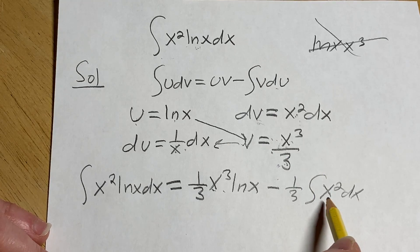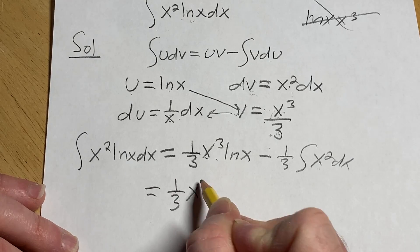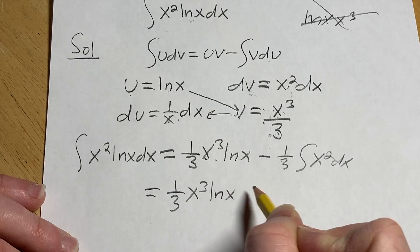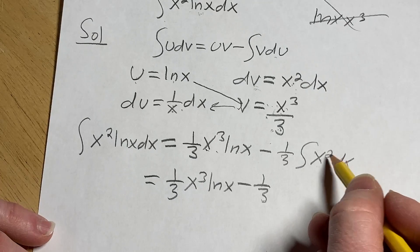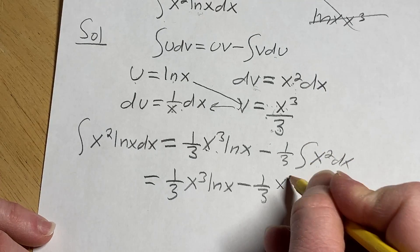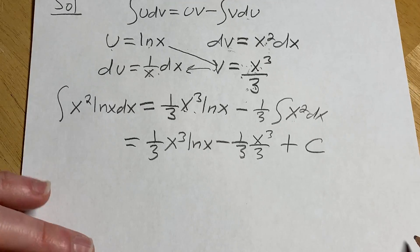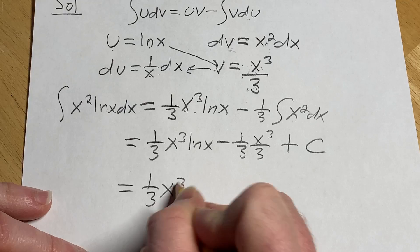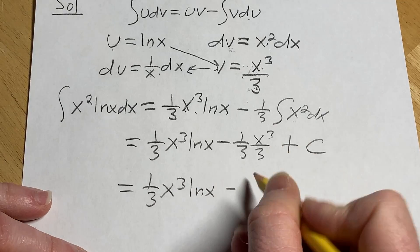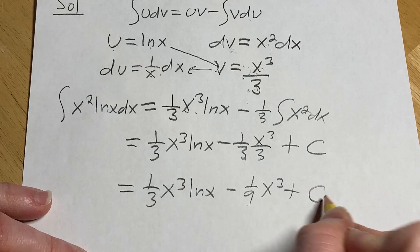This is easy to integrate, we can just use the power rule. This is equal to 1/3 x cubed ln x minus 1/3. Using the power rule here we'll add 1 to the exponent and divide by the result. So it's x cubed over 3 plus our constant of integration capital C. So this is equal to 1/3 x cubed ln x minus 1/9, because 3 times 3 is 9, x cubed plus C.